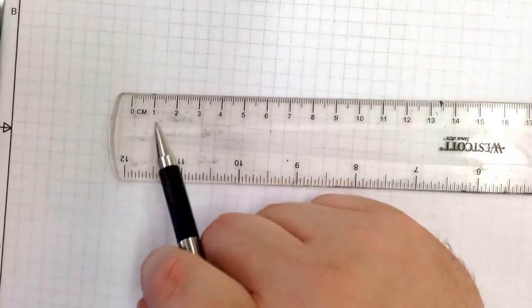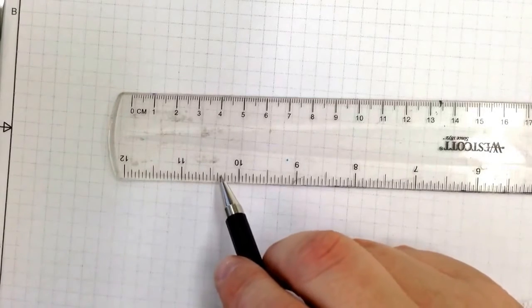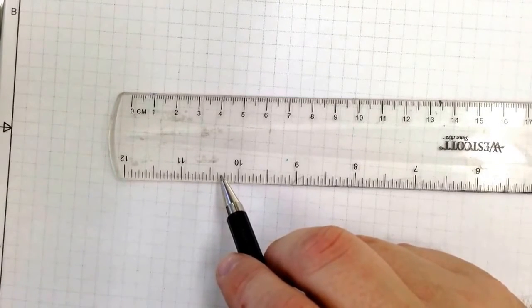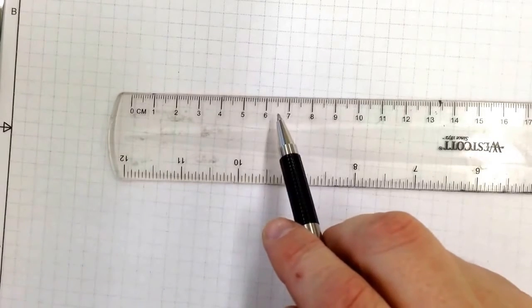We're going to talk a little bit about metric measurements right now. We talked about the fractional side, which is how we commonly measure things in the United States. But most of the rest of the world uses metric measurements.